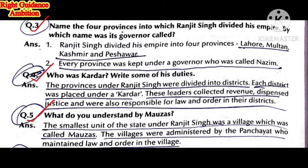What do you understand by Mojas? The smallest unit of the state under Maharaj Ranjit Singh was a village, which was called a Moja. The provinces were divided into districts, and the districts were further divided into Mojas. Each village was administered by a panchayat, which maintained law and order in that village.